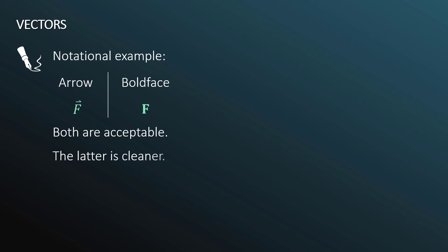Let's talk more about vectors. Specifically, the notation. One notational example is that if you have a quantity, let's say force, we can put an arrow over the F to indicate that we are discussing a vector quantity. This is a perfectly valid representation. There is another way to represent a vector, which is simply the bold face. Both of these are acceptable. The latter is typically considered to be cleaner and is often used in textbooks.